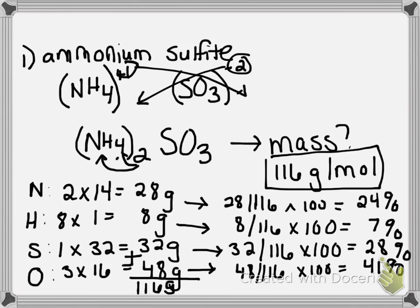Now just to double check your answer and make sure that this is correct, what you could do is go back and add up these percentages. And to make sure you're correct, these percentages should add up to 100%. So if we add 24 plus 7 plus 28 plus 41, we get 100%. So we know that we did this problem correctly.